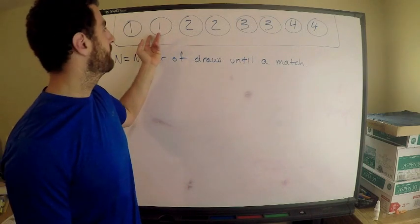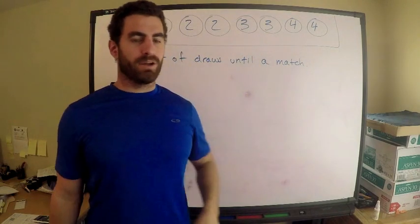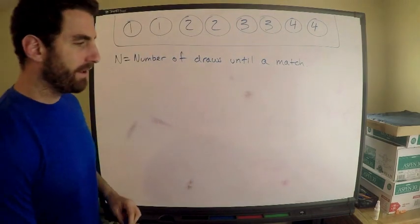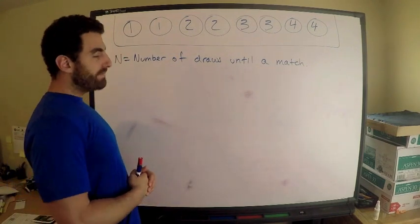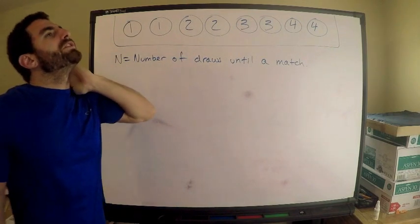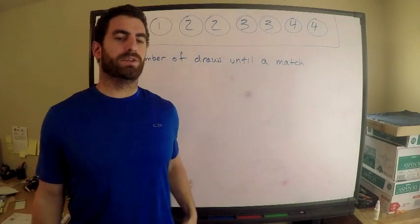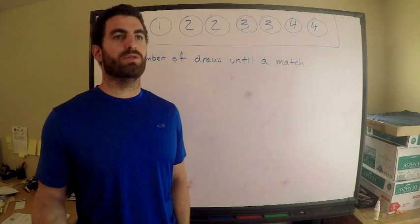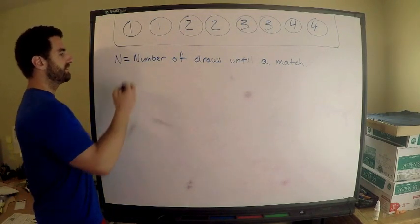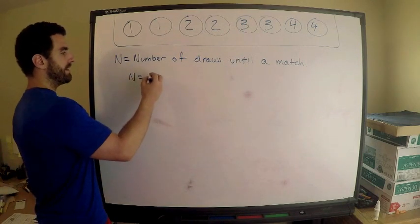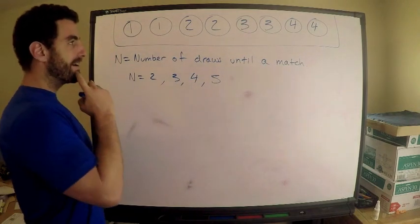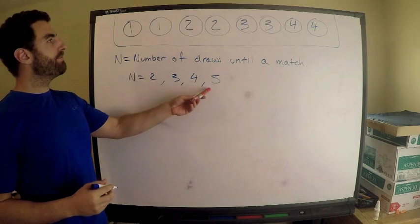Here's the situation — these are my socks. I have four pairs. The question says: find the probability of the maximum number of draws until you get a match. I want N to be the number of draws until I get a match. It's a discrete random variable. What can N possibly be? Well, you definitely can't get a match after one draw, but you can after two, three, four, or five.